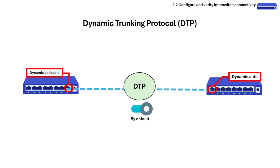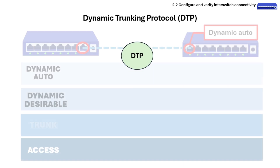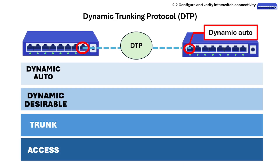There are four main DTP modes: Dynamic Auto, Dynamic Desirable, Trunk, and Access — each with its own behavior in trunk negotiation.